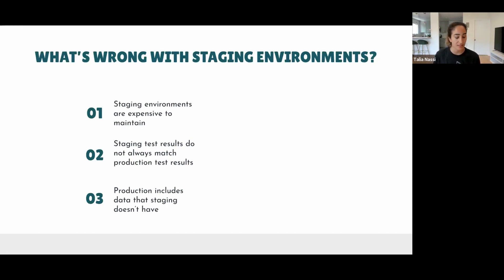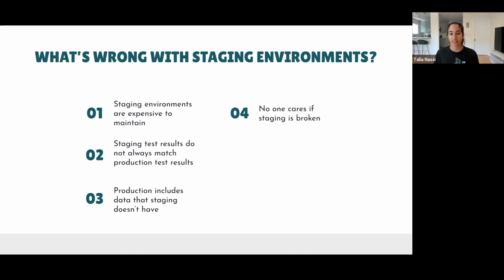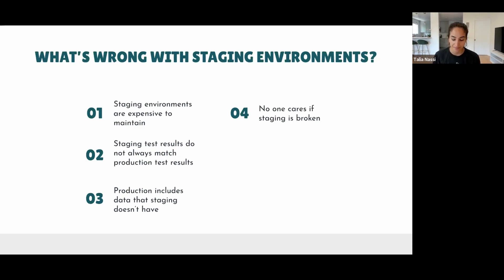Production includes data that staging doesn't have, and you're never going to know the differences until you test there. Also, no one cares if staging is broken. Picture this: you're testing a high-priority fix and you log into staging to test it, but staging is down — you get the 404 screen of death. You ping the DevOps person and they're not answering, someone else tells you to open an IT ticket, and you have to get your manager to escalate it.